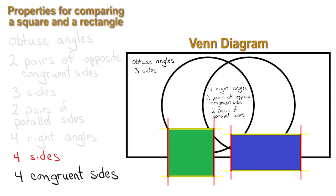So the next one is four sides. Both the square and rectangle have four sides, so that will be written in the center and checked off the list.